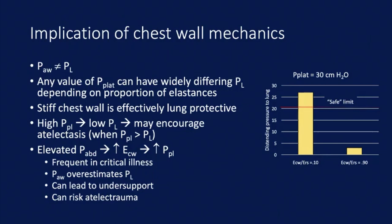A stiff chest wall is effectively lung-protective from the standpoint of stress. On the flip side, if pleural pressure is high enough to exceed alveolar pressure, transpulmonary pressure can become negative, which is associated with alveolar collapse and atelectasis. During mechanical ventilation, the lung may be subjected to cyclic recruitment and de-recruitment of collapsed units, presenting the risk of shear stress, atelectrauma, and biotrauma. In critical illness, elevated abdominal pressure is frequently seen, increasing chest wall elastance and pleural pressure, meaning airway pressures overestimate transpulmonary pressure and ventilator settings guided by airway pressure can lead to under-support. This raises the question: would transpulmonary pressure be a better target?